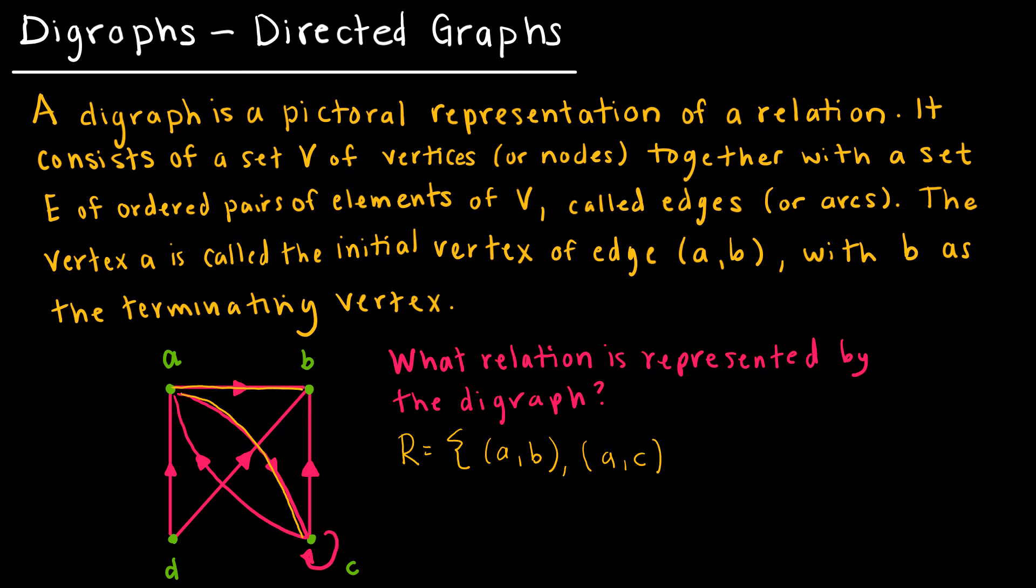And then does A map to D? No, because even though A, D are connected, notice the arrow is actually pointing from D to A. So A, D is not in my relation.